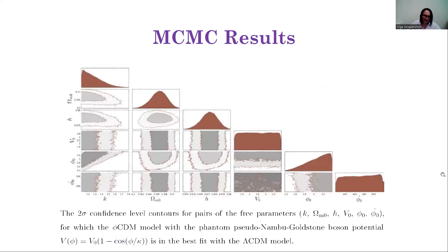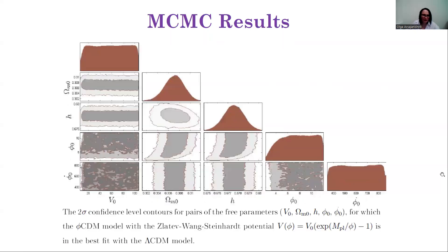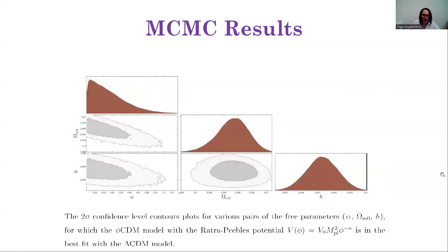As a result of the MCMC analysis for each potential, posterior ranges of model parameters and initial conditions were obtained, which include the prior ranges of initial conditions and model parameters. For instance, two-sigma confidence level contours for various pairs of the free parameters for some models are presented here: for the pseudo-Nambu-Goldstone-Boson model, for the quintessence Zlatev-Wang-Steinhardt model, and for the quintessence Ratra-Peebles model.